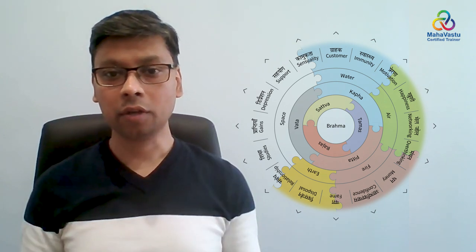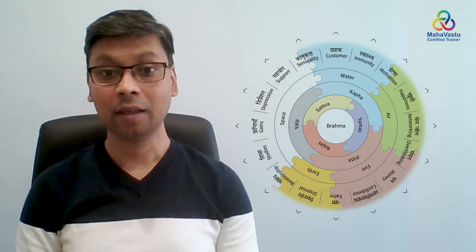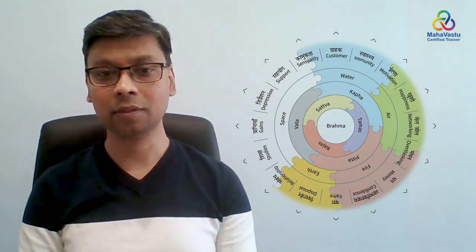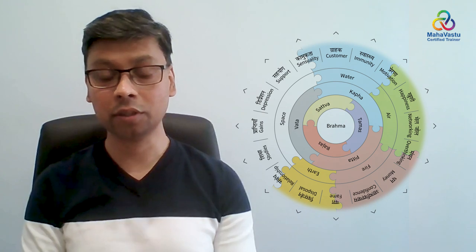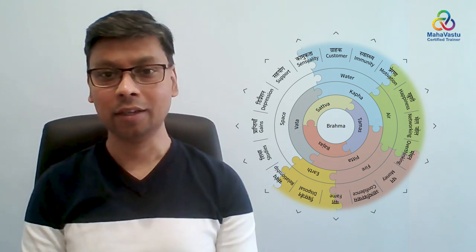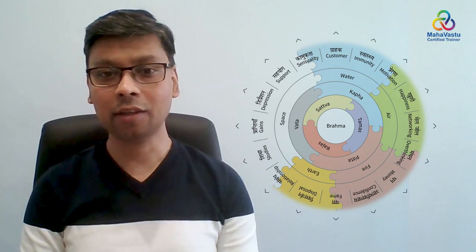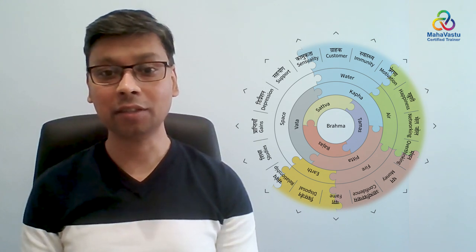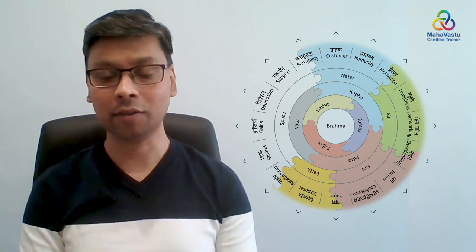Our whole body is basically made up of five elements or panchabhuta. What are these panchabhuta? Air, fire, water, space and earth. These forms the total composition of five elements, and that's where it starts our today's journey - how these five elements play a magical role in our life as well as in Mahavastu.